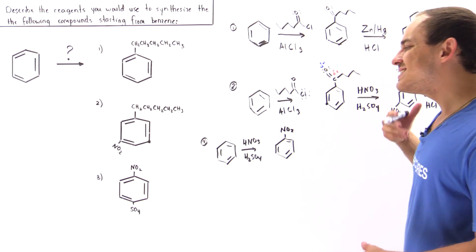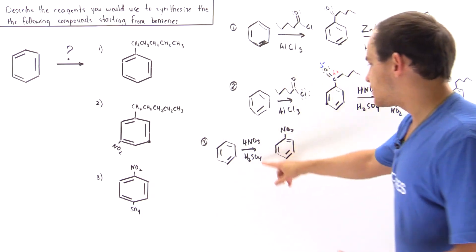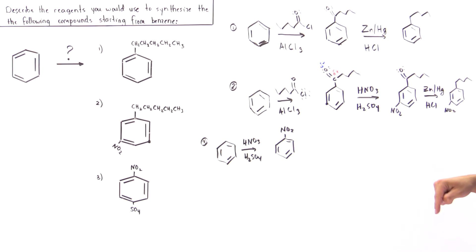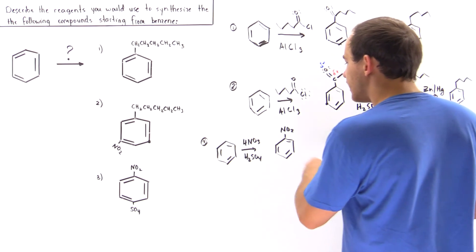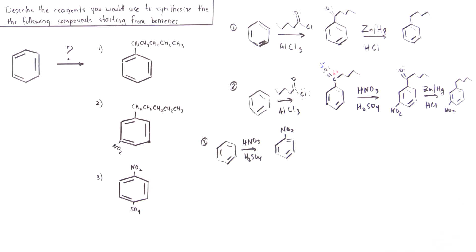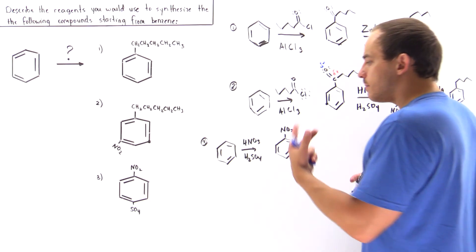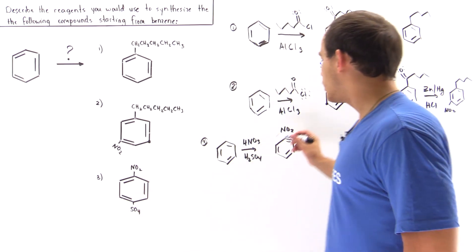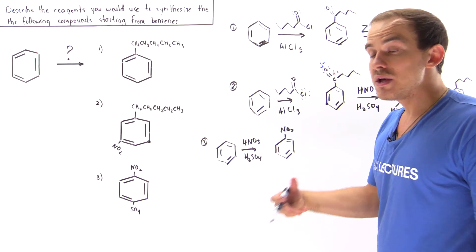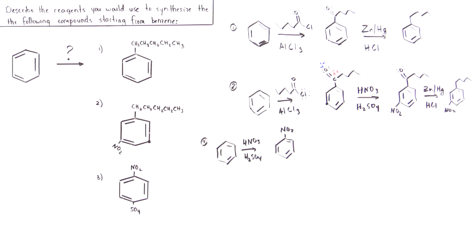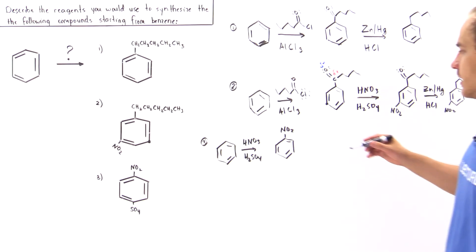We cannot simply perform sulfonation on this nitrobenzene with H2SO4, because the NO2 group is not ortho/para-directing — it is meta-directing. So before we place the SO3 group onto the desired position, we have to convert the NO2 group into a group that is ortho/para-directing. The first step in doing that is to reduce the NO2 group and get rid of the oxygen.